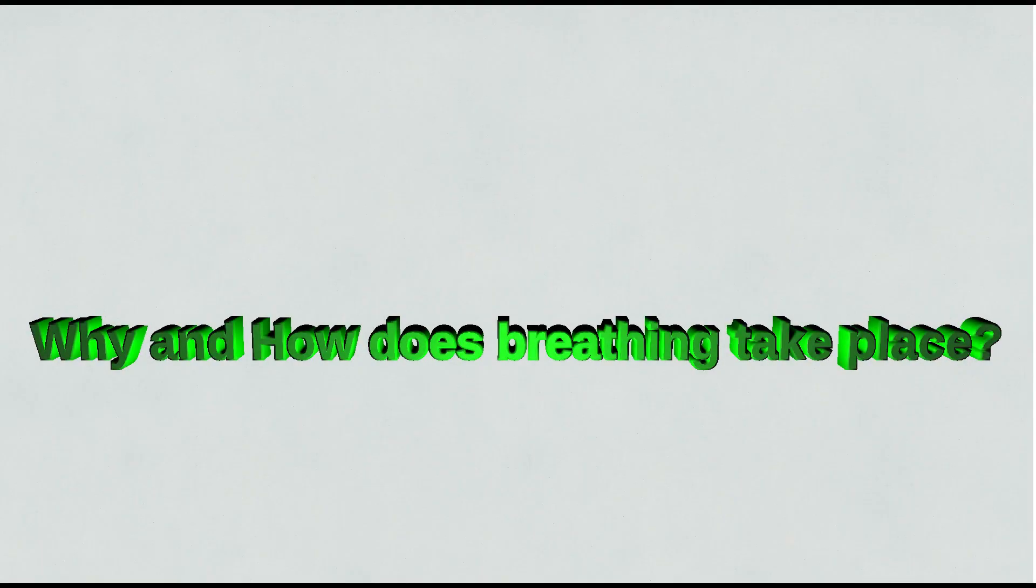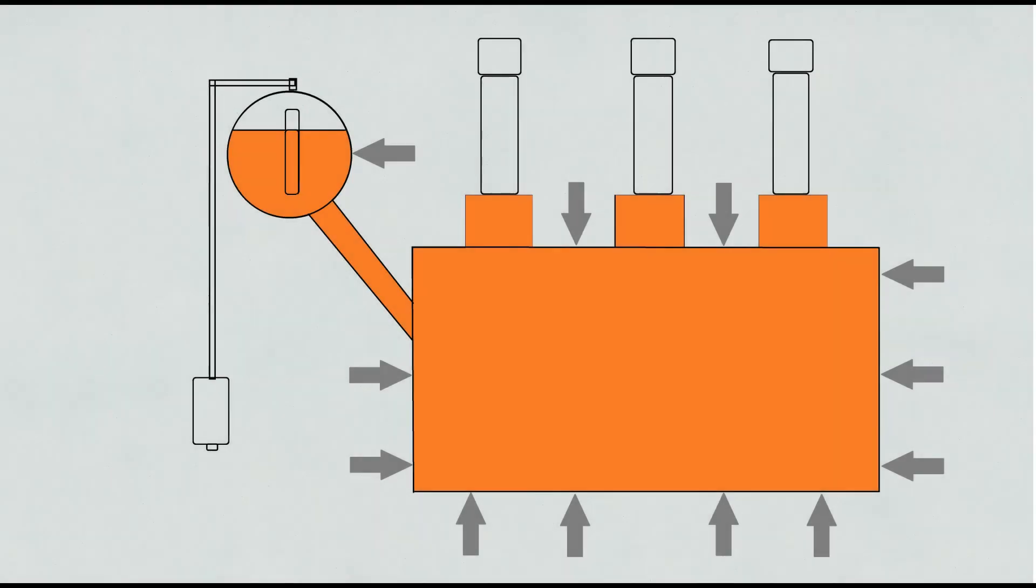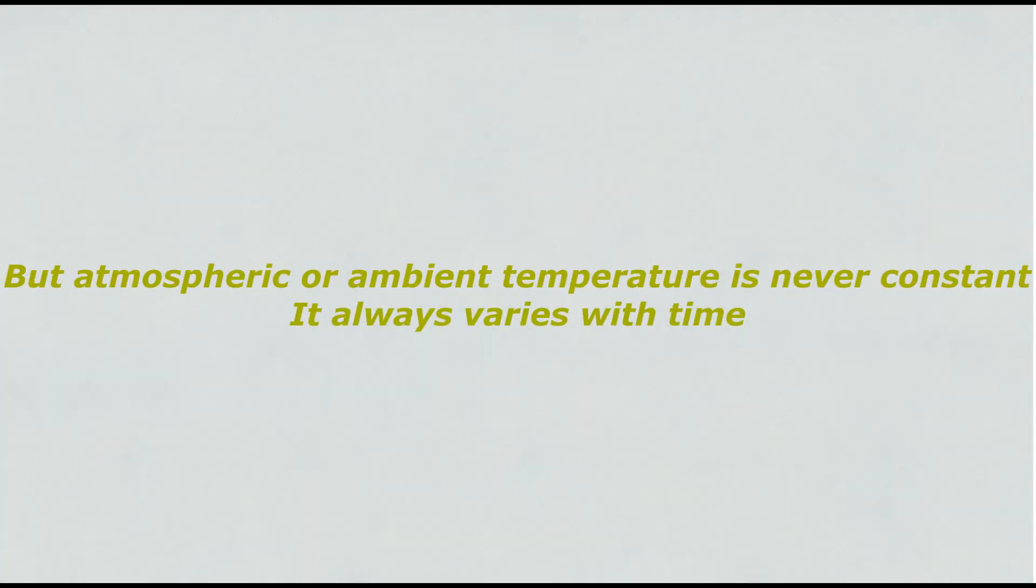For the second and third questions, why and how does breathing take place? As we know, a transformer is an airtight machine completely filled with insulating oil, meaning there is no way to pass air in or out of the transformer. But atmospheric or ambient temperature is never constant. It always varies with time.